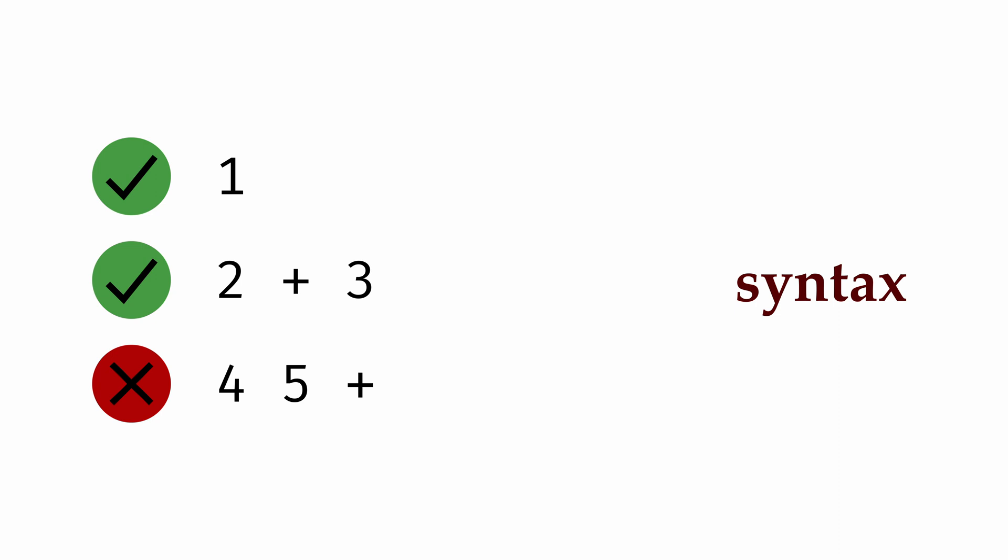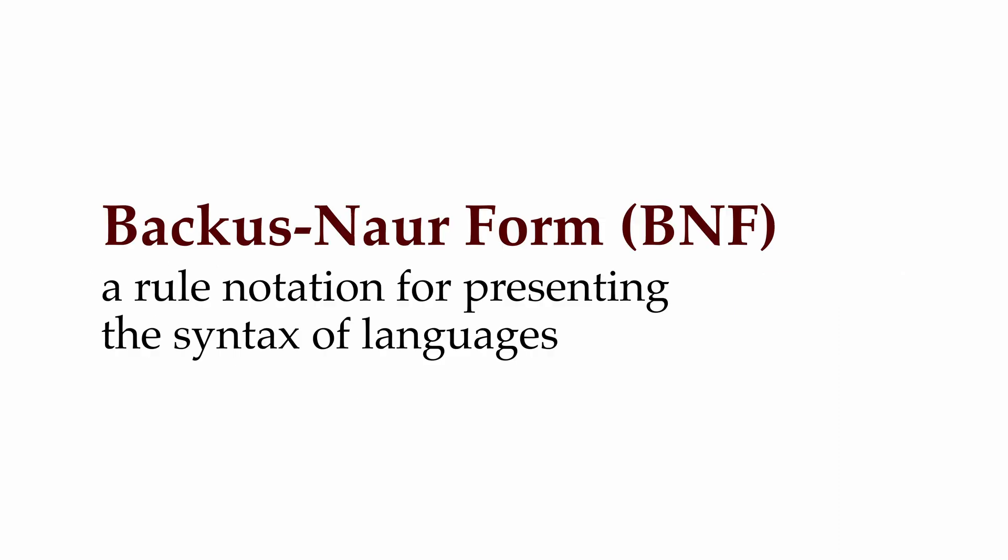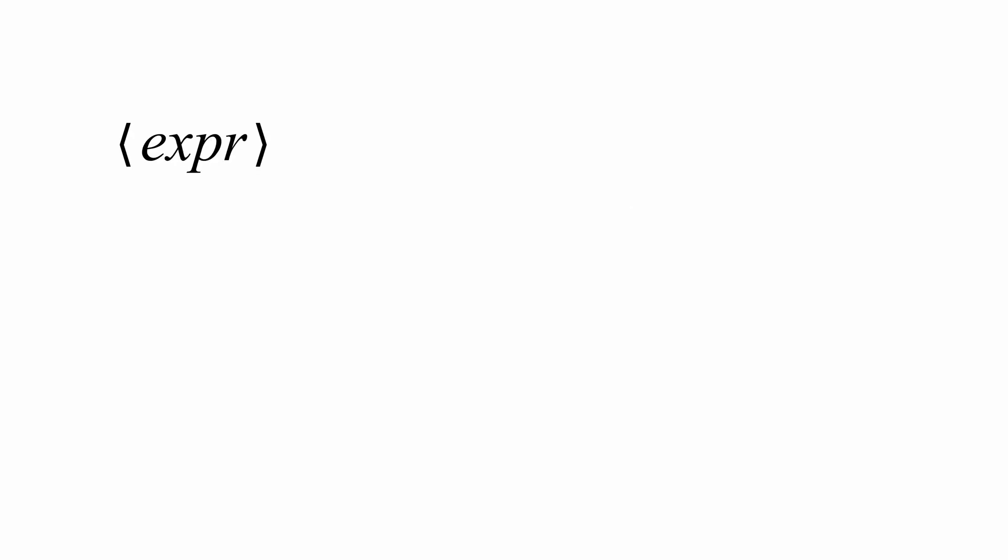To be formal about this, we can define some rules for what basic arithmetic expressions look like. We're going to write these rules in a standard notation known as Backus-Naur form, or BNF. Let's start by writing a rule for how we form an expression. We're using the letters EXPR in angled brackets to stand for the class of all valid arithmetic expressions. This double colon equals sign tells us how we form the expression class on the left. And on the right-hand side, we might say number to indicate that any number is a valid arithmetic expression.